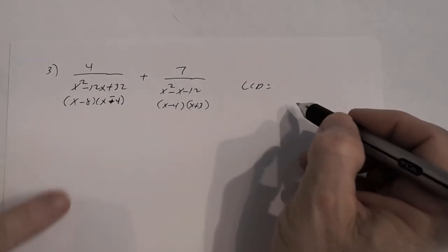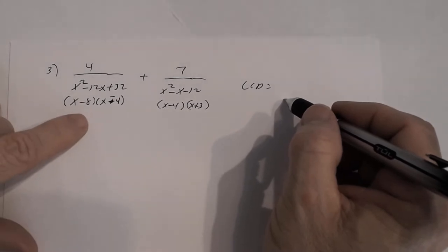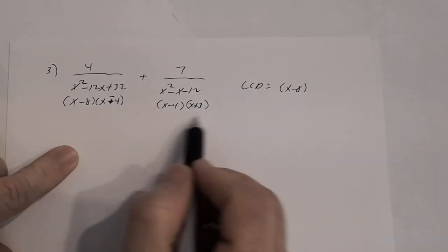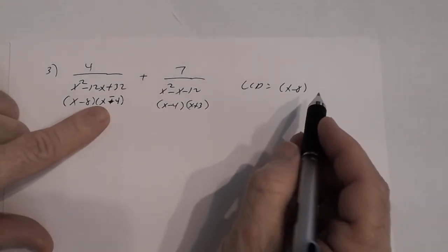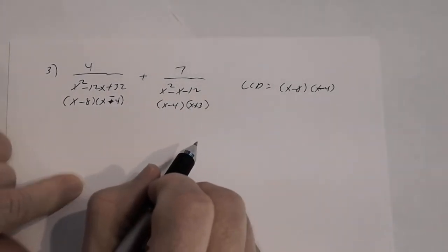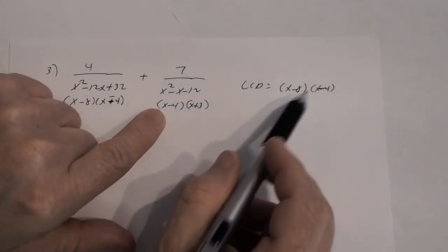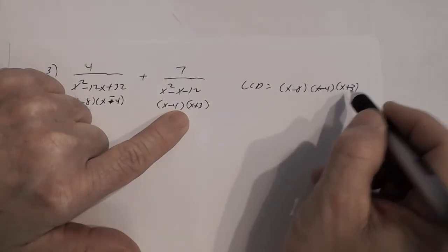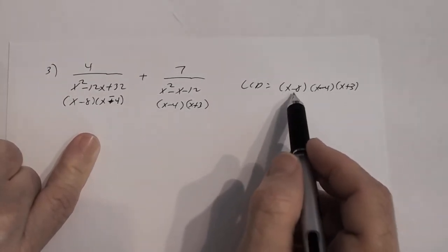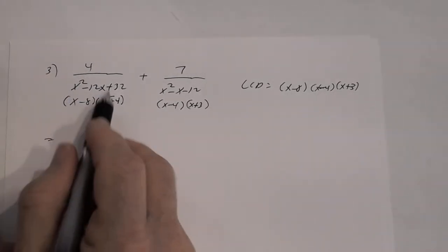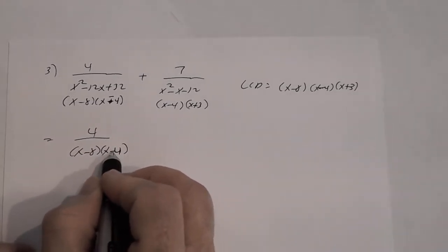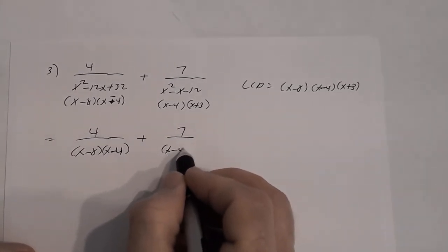Your least common denominator must include every factor you see. I see x minus 8 — I need one. I see x minus 4 — I need one (it appears in both denominators but I just need one). I see x plus 3 — I need one. So the LCD is x minus 8 times x minus 4 times x plus 3. Now rewrite the original problem with the denominators in factored form: 4 divided by x minus 8 times x minus 4, plus 7 divided by x minus 4 times x plus 3.